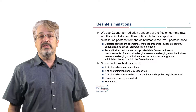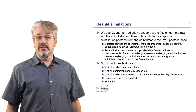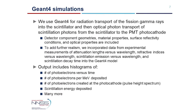Geant4 treats each particle separately and applies its applicable physics to generate its behavior, whether it be a gamma, a Compton electron, an optical photon, or any other. We have included such details as detector component geometries, material properties, surface reflectivity conditions, and optical properties. To add further realism, data from experimental measurements of attenuation lengths, refractive indices, and scintillation emission versus wavelength and scintillation decay time were incorporated into the Geant4 model. The Geant4 library incorporates particle and nuclear physics cross-sections as well as optics to transport the incoming gammas and neutrons through the detection materials and subsequently transport the secondary particles and optical photons that are produced.